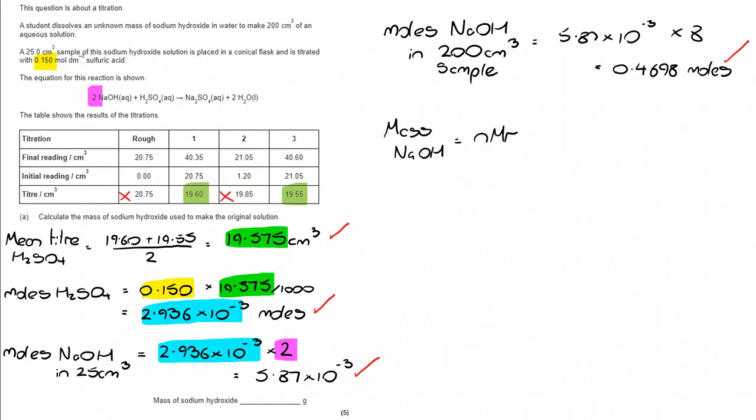So I've now got my moles of NaOH. I want my mass of NaOH, which is moles multiplied by Mr. That's 0.4698, which we can see here, and we're multiplying by 40.0. I've just added how that's been worked out here if that's helpful. That takes us to 1.88 grams.